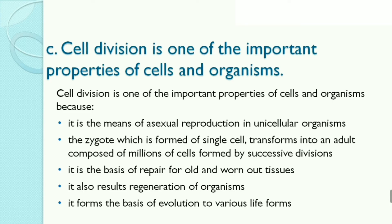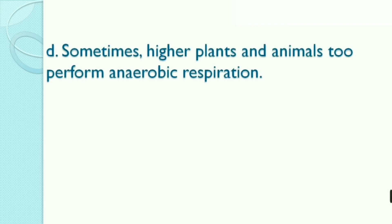Third, cell division is one of the important properties of cells and organisms because it is the means of asexual reproduction in unicellular organisms. The zygote, formed of a single cell, transforms into an adult composed of millions of cells through successive divisions. It is the basis of repair for old and worn-out tissues.